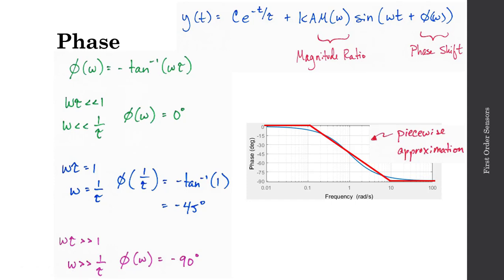Considering both plots — the magnitude ratio and the phase shift — at lower input frequencies we see 0 degrees of phase shift and the output magnitude matching the input. At higher input frequencies, the phase shifts toward minus 90 degrees, and at the same time the magnitude ratio decreases dramatically, with the output magnitude decreasing significantly for these higher frequencies.